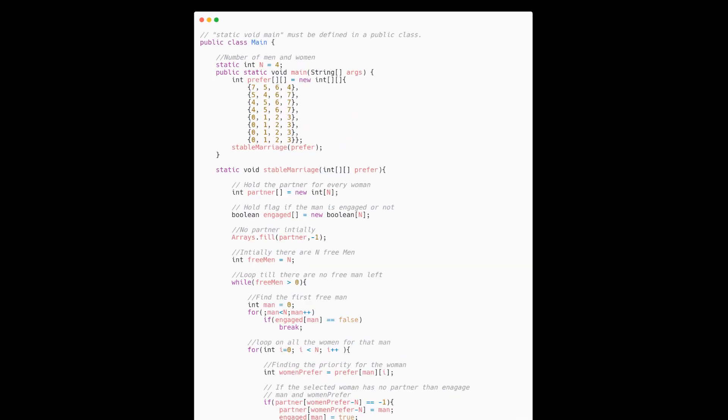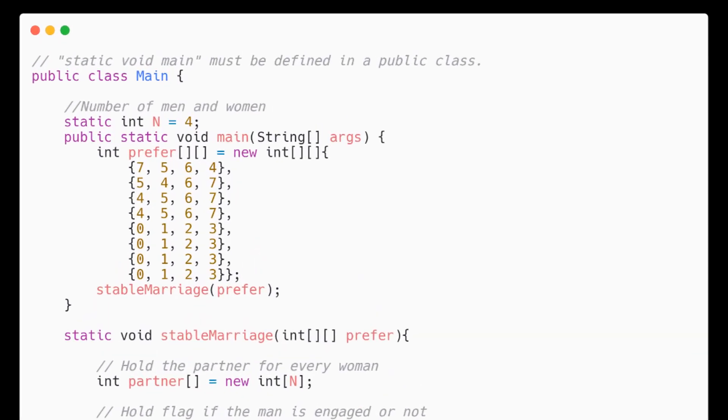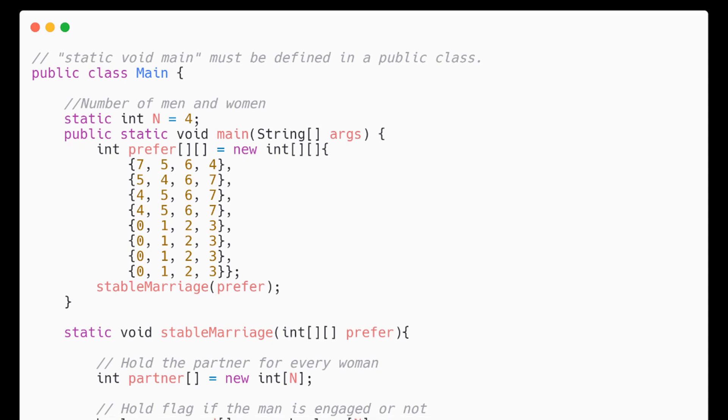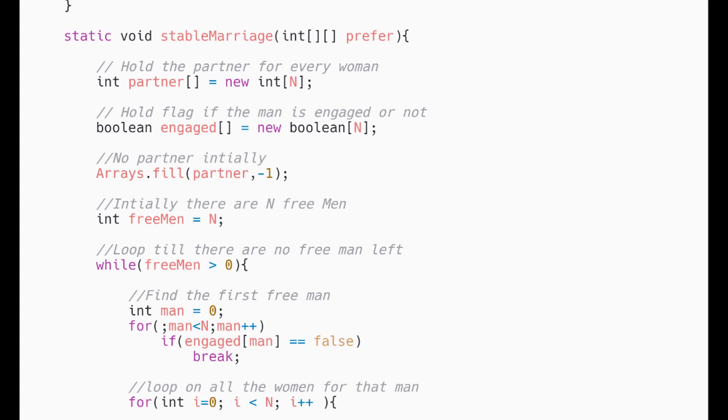Here is the whole code for the algorithm. We'll first define the priority for each of men and women for other 4 men and women respectively. Then we call stableMarriage function which will return the relationship between men and women.